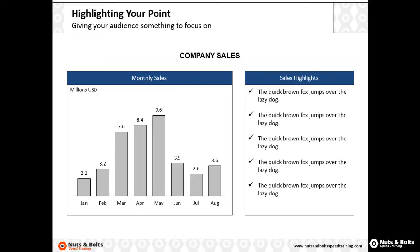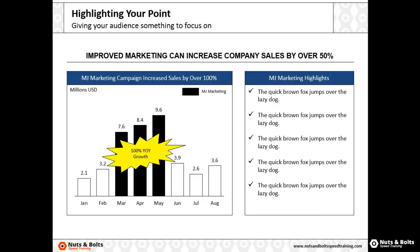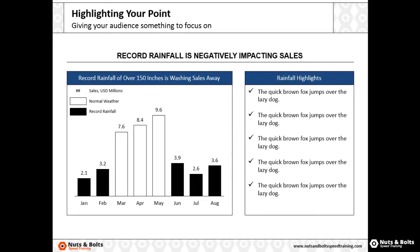With just a little bit of formatting, you can take a generic looking layout that's not really useful or meaningful and give your audience something they can evaluate and discuss. The reason highlighting your point is so important is that you could easily take the same data set and highlight a completely different point. For example, maybe instead of focusing on the up months, you want to focus on the down months — here you can see that unusual rainfall is washing our sales away.